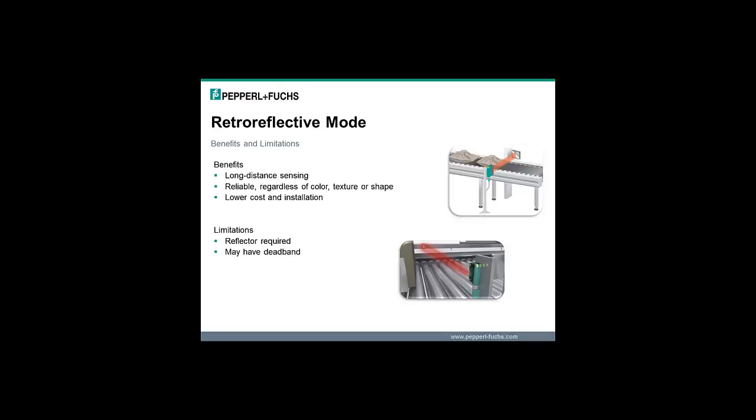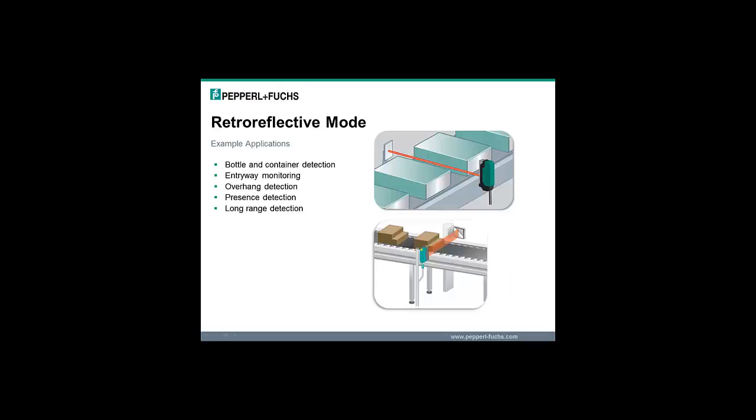Limitations of retroreflective sensors include the requirement for a reflector which has to be mounted and aligned, and most retroreflective sensors have a deadband or minimum reflector distance. Example applications include small bottle and container detection, entryway monitoring, material overhang detection, presence detection of passing totes or cartons, and long range detection of shiny objects.